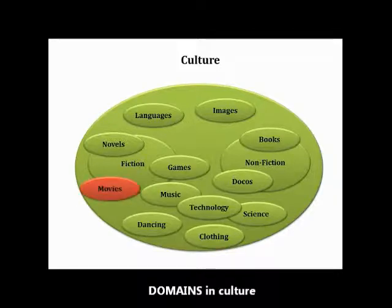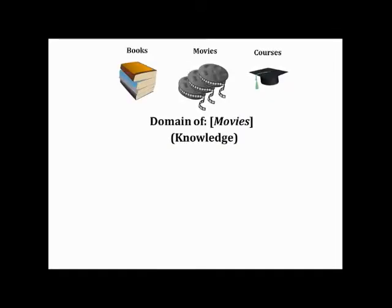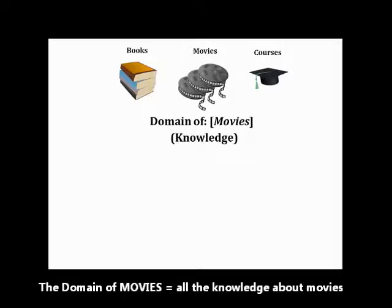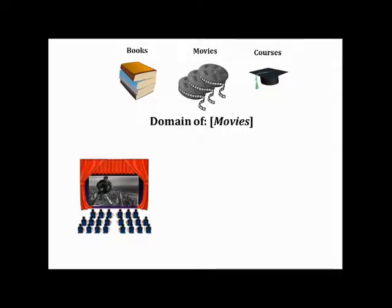I'm going to talk about one domain in culture — the domain of movies — and use that in reference to the Systems Model of Creativity. The domain of movies is all the knowledge about movies: all the books and printed matter that have ever been written about movies, websites, comics, pamphlets. You have all the movies themselves — there are about 500,000 movies in existence at the moment, most of which are not very popular, but some are. You have all the courses about movies, how to make movies, and of course word of mouth — people talk about movies a lot.